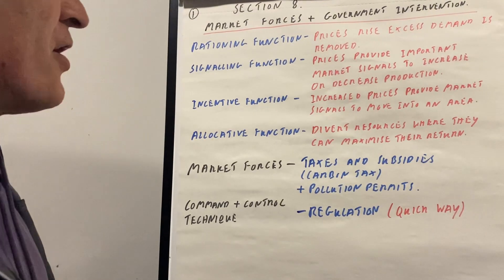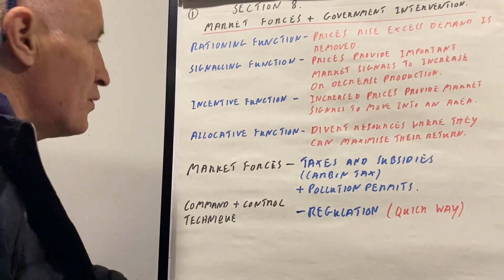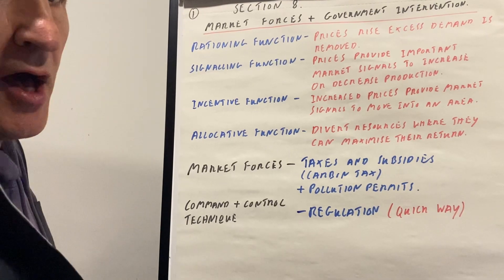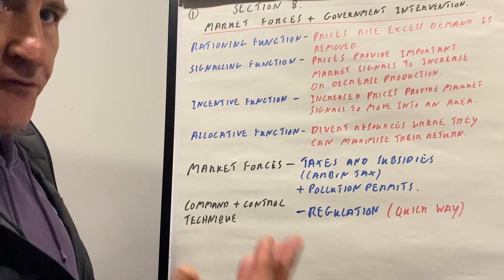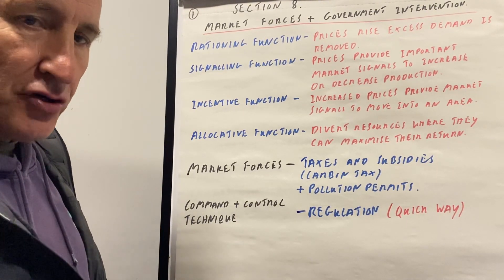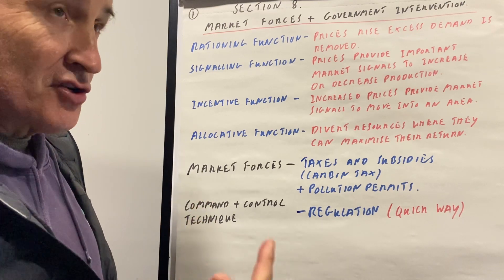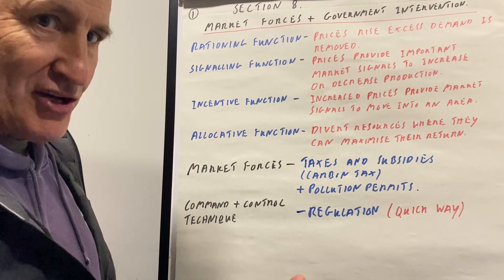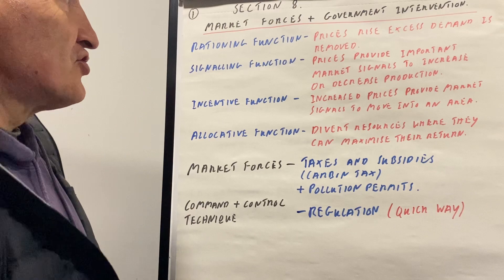This is market forces and government intervention, which is section A of the course. The price mechanism has four main functions: the allocative function, the signalling function, the incentive function, and the rationing function.